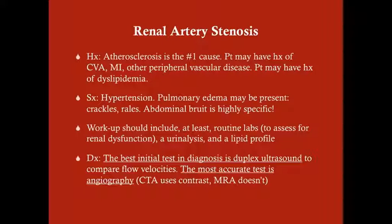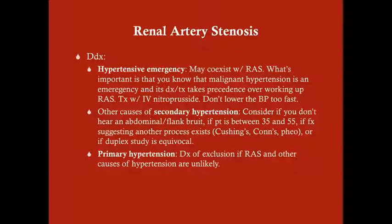The differential diagnosis for RAS includes hypertensive emergency, which is not so much a differential as something that may coexist with RAS. If the patient has a severely elevated blood pressure — particularly systolic over 220 — you need to treat the hypertensive emergency first before working up for renal artery stenosis. Don't get tripped up on the USMLE: if the patient has a hypertensive emergency, you must treat that first.